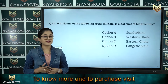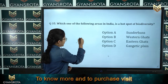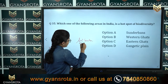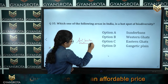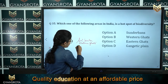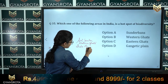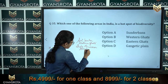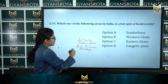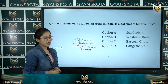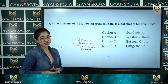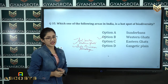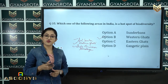The three hotspots of biodiversity in India are Sri Lanka, Western Ghats, and Indo-Burma and Himalaya. The correct answer is option B, Western Ghats.